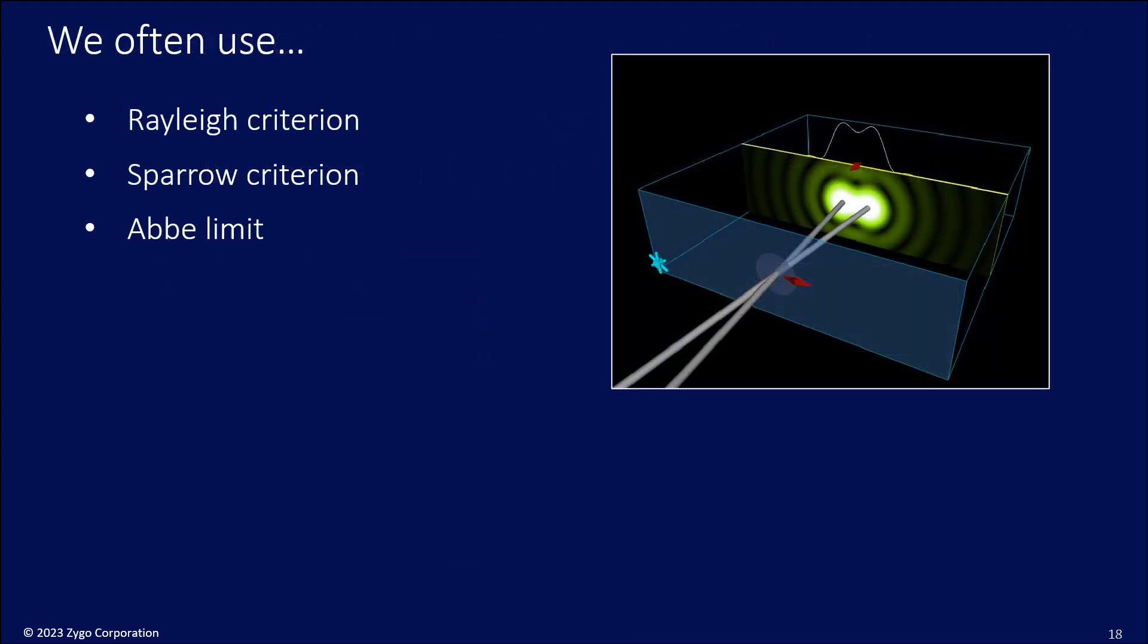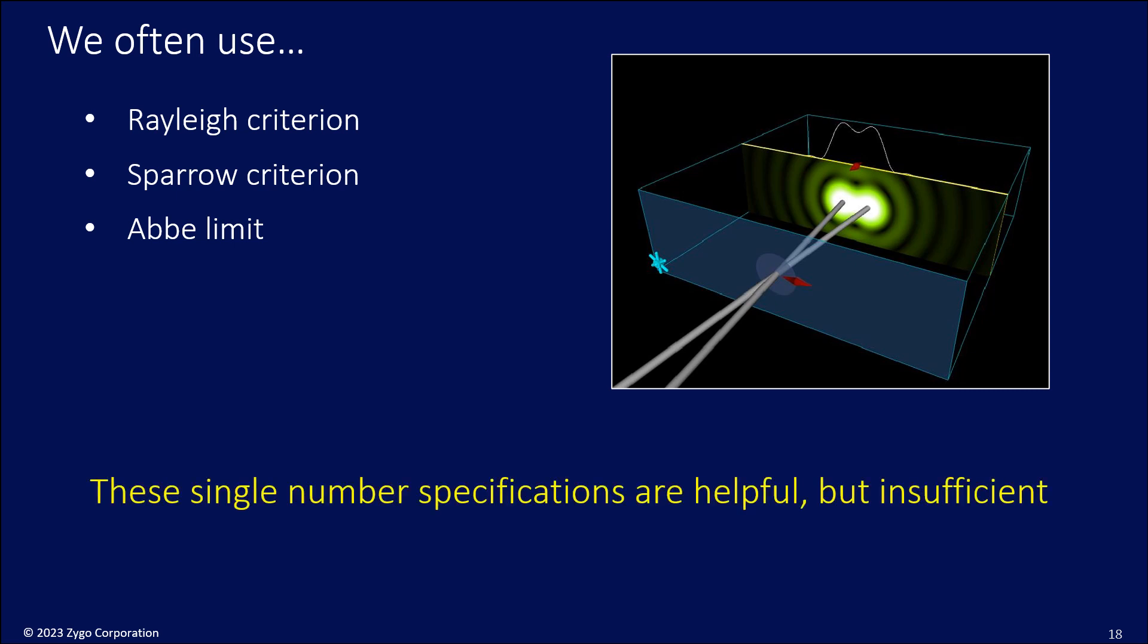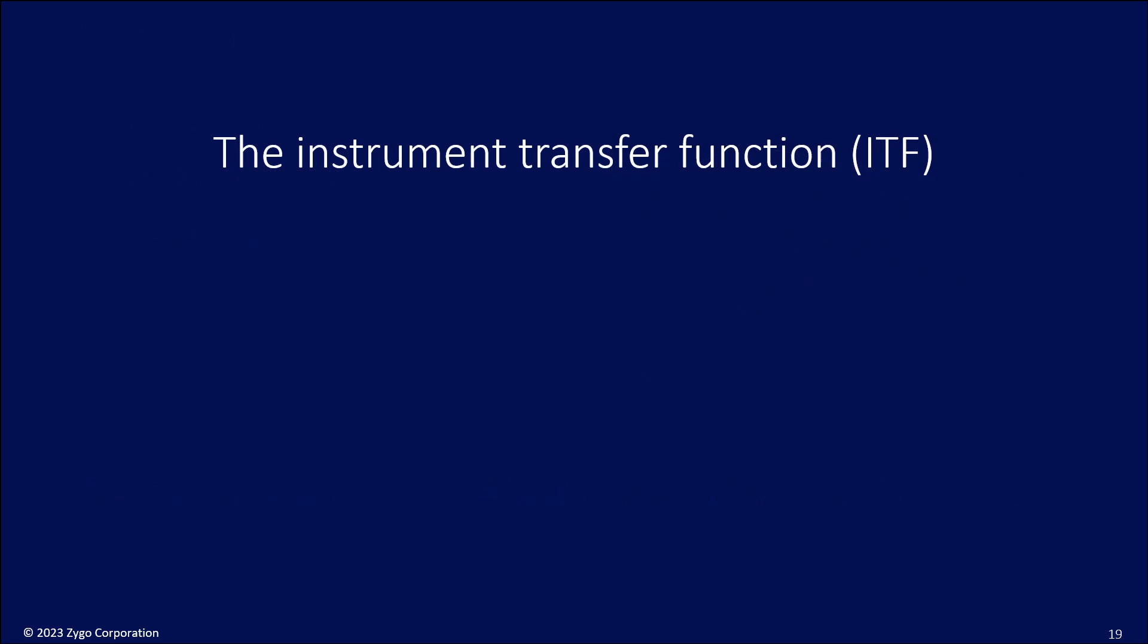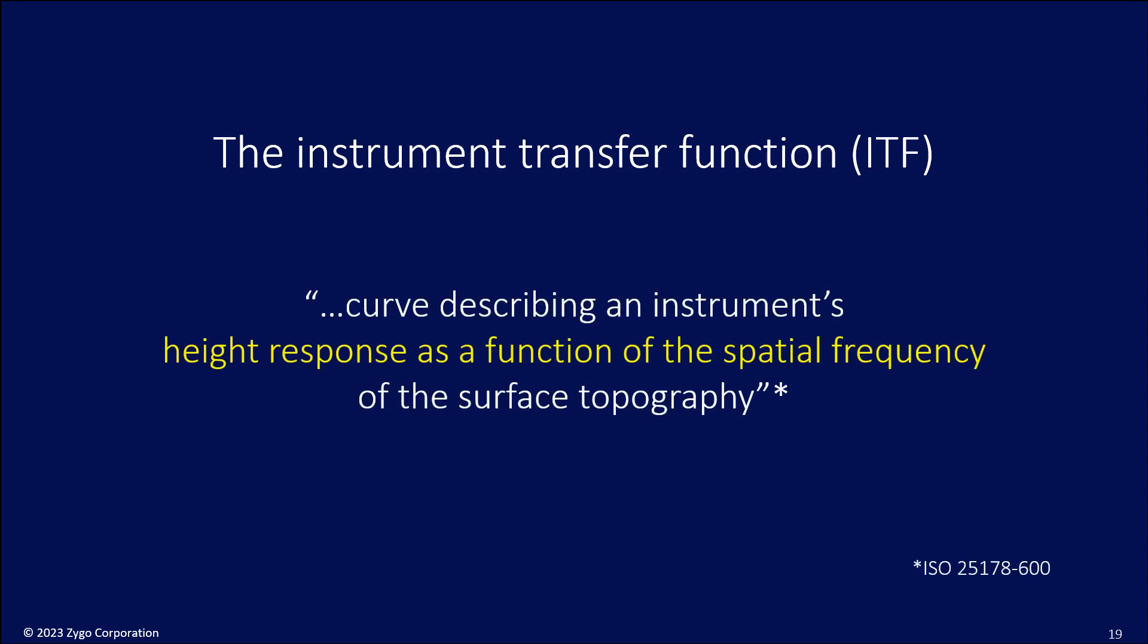The problem here is that we often use single numbers like the Rayleigh criterion, the Sparrow criterion or the Abbe limit for optical imaging and also for instruments like interference microscopes that use imaging systems as part of the measurement principle. The single number is helpful, but it's really not sufficient. It doesn't tell you why you measure 3 nanometers when in fact you have 26 nanometers for the depth of those features. To really characterize the behavior of these instruments, you would like to use something like the MTF, and that's called the instrument transfer function in the context of topography measurement. It's been defined in the ISO standards as a curve describing an instrument's height response as a function of the spatial frequency of the surface topography. So very similar to the MTF, but now we're talking about surface heights.